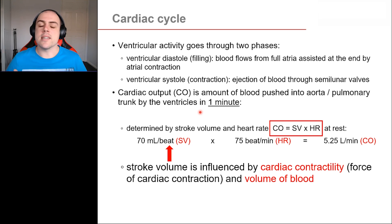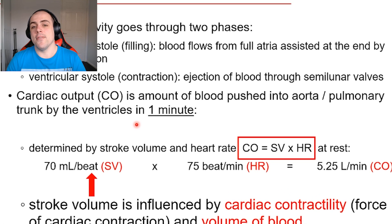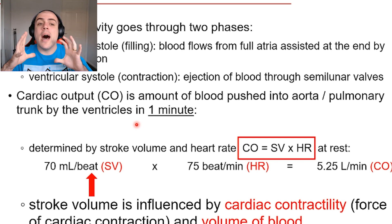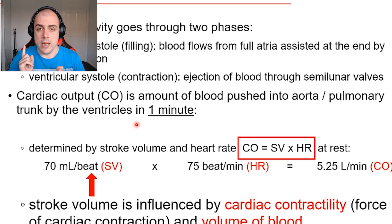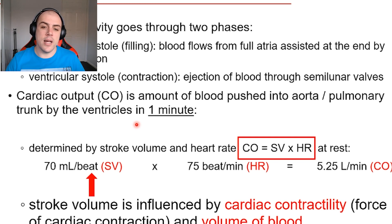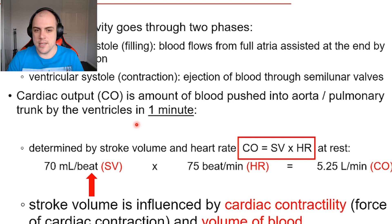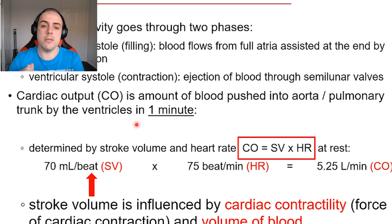Within the cardiac cycle, we also have cardiac output. Please be careful not to confuse cardiac cycle with cardiac output — they are two very different things. The cardiac cycle is what happens per cycle, i.e., per heartbeat. Cardiac output tells us the amount of blood being ejected from the aorta or pulmonary trunk per minute.